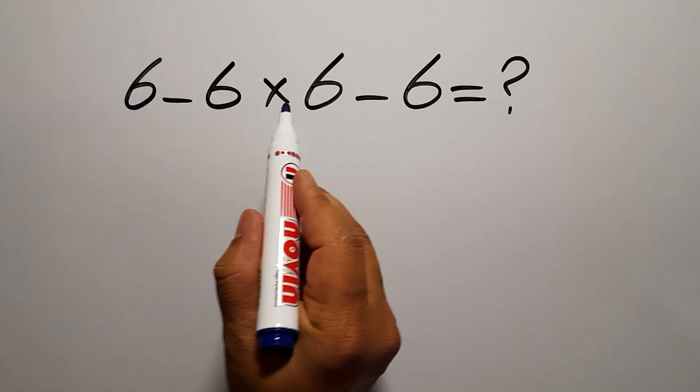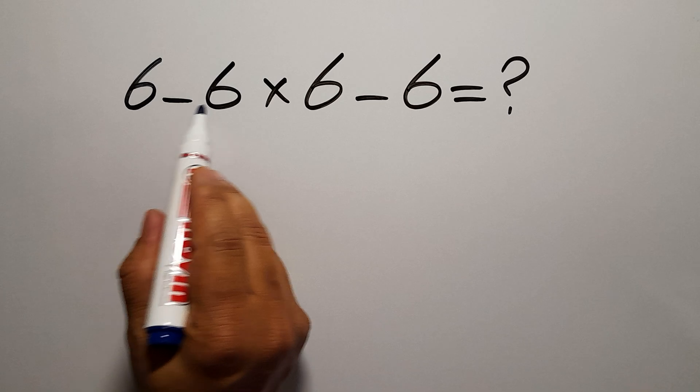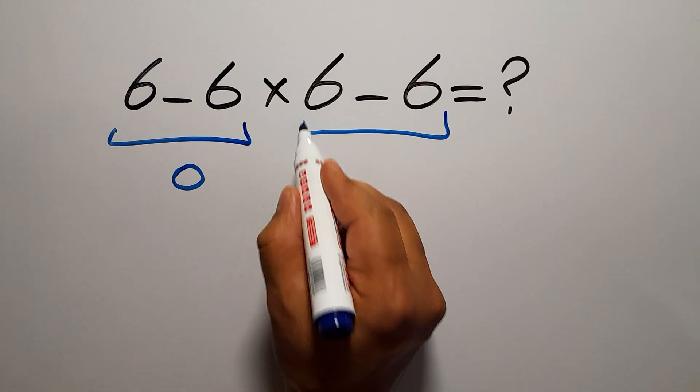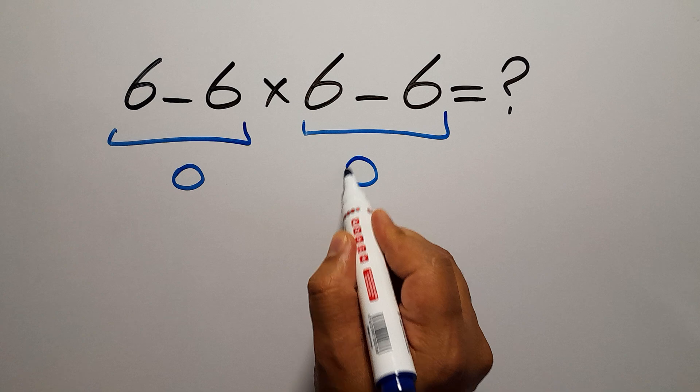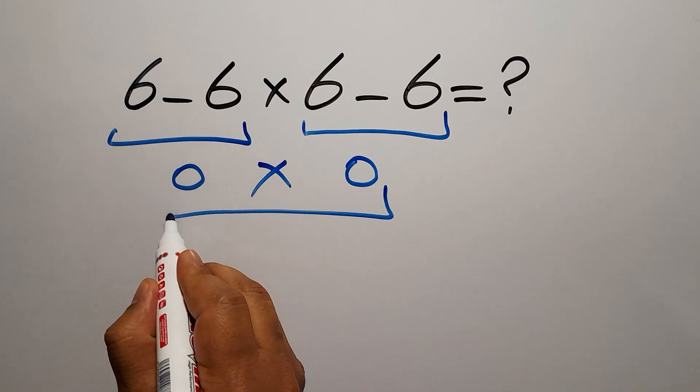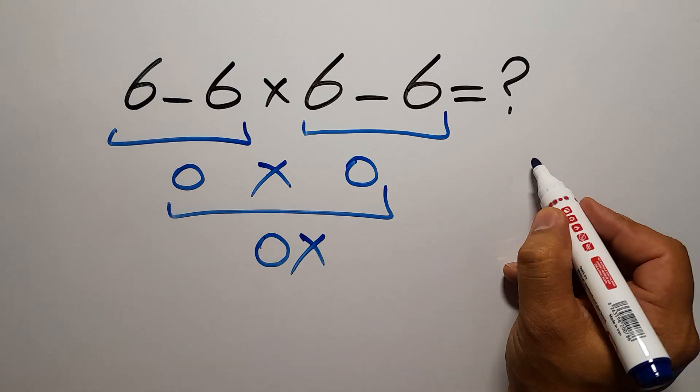6 minus 6 times 6 minus 6. If we solve 6 minus 6, we get 0, and again we have 6 minus 6, which is 0. So 0 times 0 is just 0. But this answer is not correct because according to the order of operations...